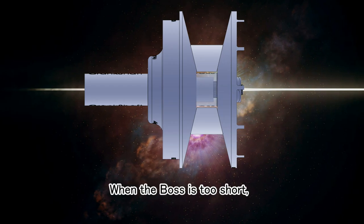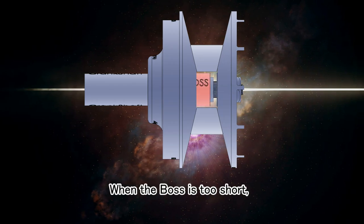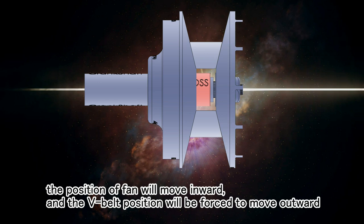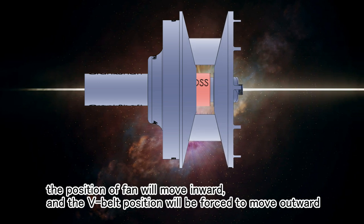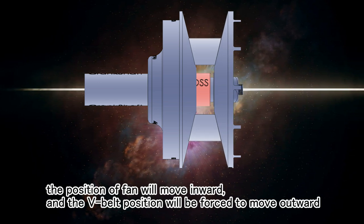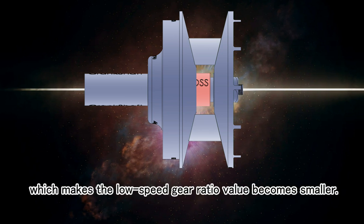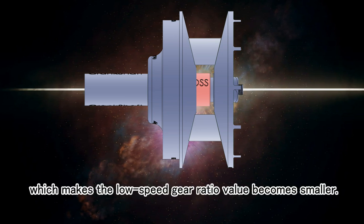When the boss is too short, the position of fan will move inward and the V-belt position will be forced to move outward, which makes the low speed gear ratio value become smaller.